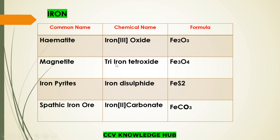Magnetite — chemical name is triiron tetraoxide, formula is Fe₃O₄. The next one is iron pyrites — chemical name is iron disulfide, formula is FeS₂.